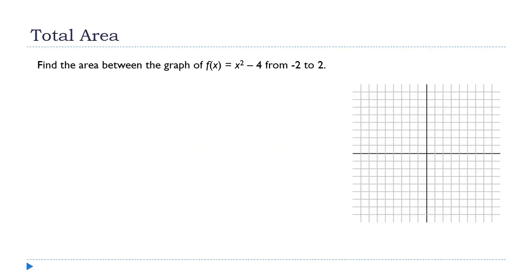We're still talking about areas using our fundamental theorem of calculus. I want to find the area between the graph of f(x) = x² - 4 and the x-axis from negative 2 to 2. My definition of area says this area is the definite integral from negative 2 to 2 of x² - 4 dx.